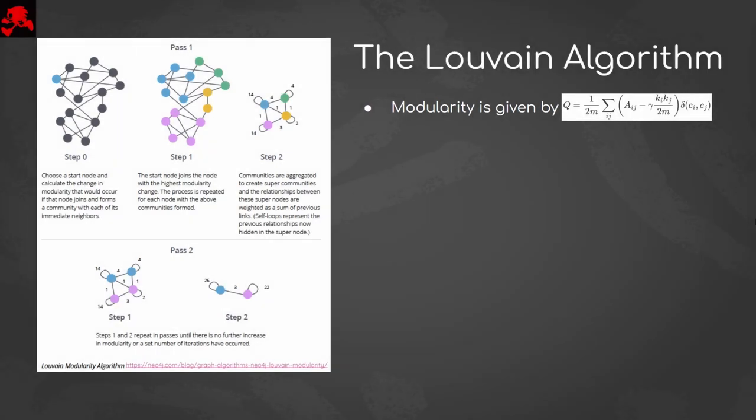To understand Louvain, we must be familiar with modularity. It is a score between minus 1 and 1 which compares the density of links within a community to the density of links between communities. Finding the absolute maximum of this value is computationally hard, and so in 2008, researchers at Louvain University published a heuristic method to efficiently approximate the maximum modularity.